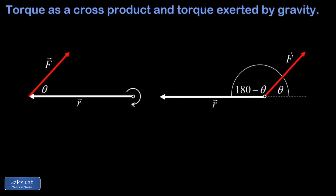In this video we introduce the cross product definition of torque, derive a formula for the torque exerted by gravity on a rigid body, and then apply the new formula to a short example.